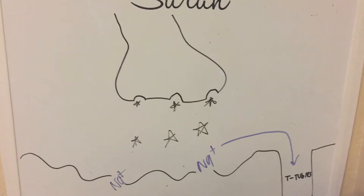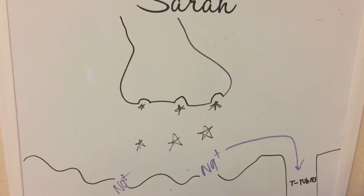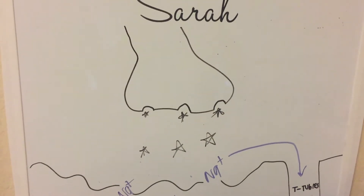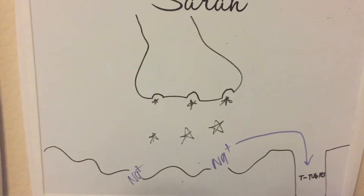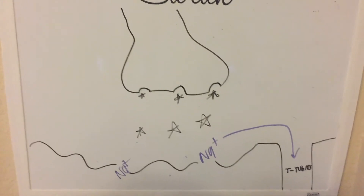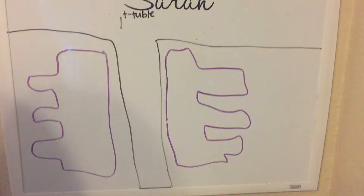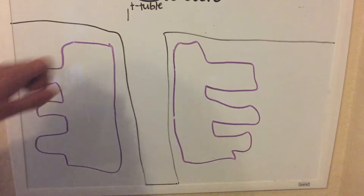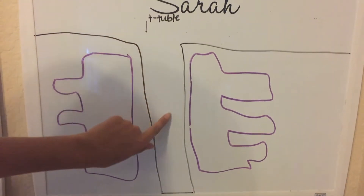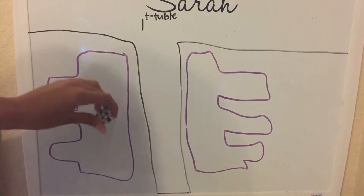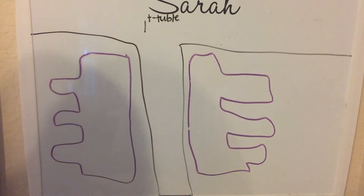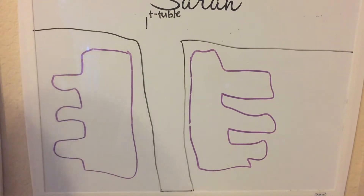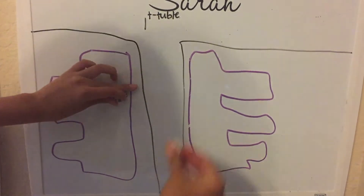It is going from the nerve traveling down the T-tubules and where it is going to reach the sarcoplasmic reticulum. As it's going down the T-tubules, it causes the sarcoplasmic reticulum to release calcium.